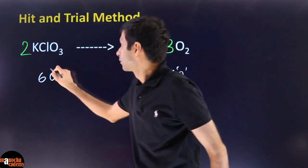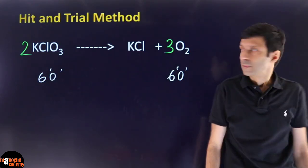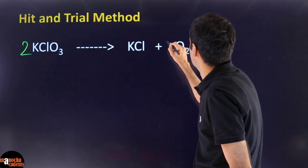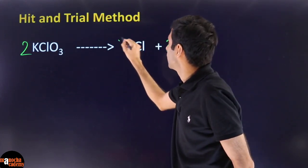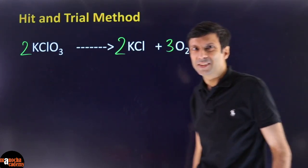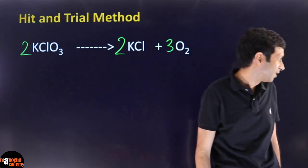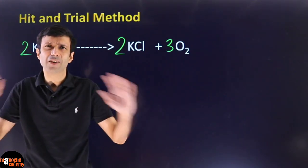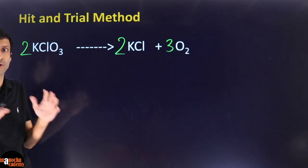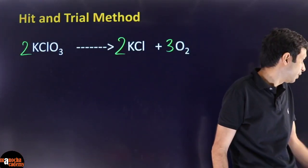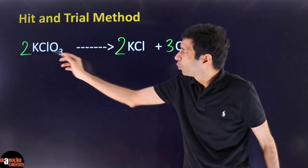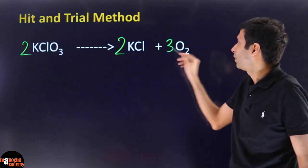Always remember: don't be too generous with your multiplying numbers. Use the smallest possible number that works. If you end up with large numbers, check for a common factor (HCF) and divide. For example, if you have 4H2 + 2O2 → 4H2O, the common factor is 2 — divide all by 2 to get 2H2 + O2 → 2H2O. If you leave unnecessarily large coefficients, your teacher will mark it wrong. Always check that no common multiplier exists among your final coefficients.